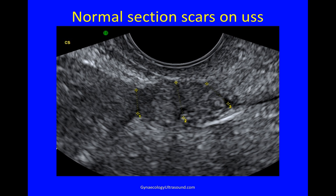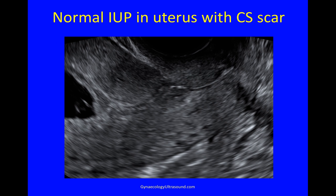Here are some normal caesarean section scars on ultrasound. This is a very magnified view of a longitudinal section through the uterus — here's the cervical canal, and this is more or less the region of the internal os. This is an anteverted uterus; you can see the endometrial cavity here. This patient had had three caesarean sections, all low down as you can see, and the bladder would be up here. In the second image, again the cervical canal and anteverted uterus: here you can see the section scar, then a little bit of closed endometrial cavity, and then the intrauterine pregnancy — you can see it's a long way away from the caesarean scar.